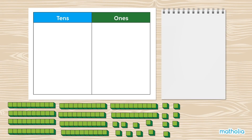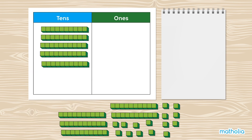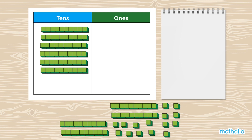Let's add 65 and 16 using base 10 blocks and a place value chart. We can show 65 using 6 tens and 5 ones. Let's write 65 here.